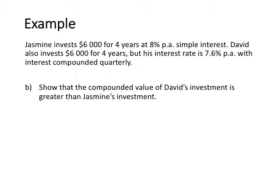Looking at David's calculation, he invested $6,000 at 7.6% compounding quarterly for 4 years. David's principal is $6,000, his interest rate is 0.076, and because he's compounding quarterly we need to divide that by 4. The number of compounding periods is 4 times 4, which equals 16.